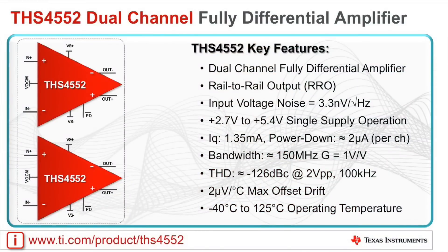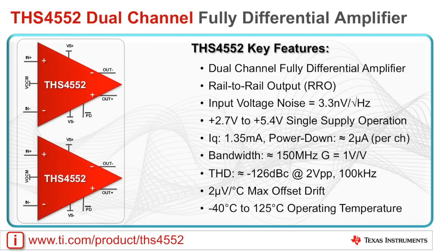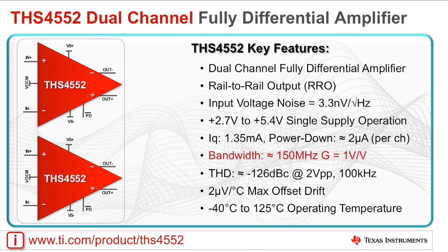The THS4552 is a dual-channel, low-noise, rail-to-rail output, fully differential, high-speed amplifier that's ideal for use in differential active filter designs and for driving the input of high-resolution Delta Sigma and SAR analog-to-digital converters. The amplifier features an extremely low 3.3 nV per root hertz input voltage noise, along with 150 MHz bandwidth at unity gain. More information about the THS4552 can be found at the link shown at the bottom of the screen.